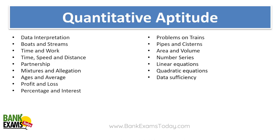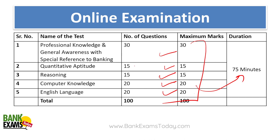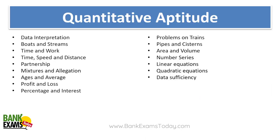The syllabus for quantitative aptitude is straightforward — 15 questions total. Around 5 questions can be expected from data interpretation and the rest from arithmetic topics including: boats and streams, time speed and distance, partnerships, mixtures and allegations, ages and averages, profit and loss, percentage and interest, problems on trains, mensuration, area and volume, number series, linear equations, quadratic equations, and data sufficiency.